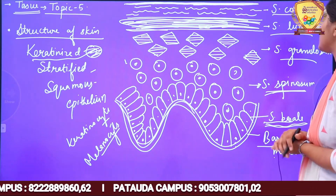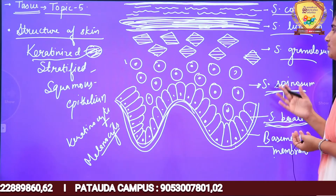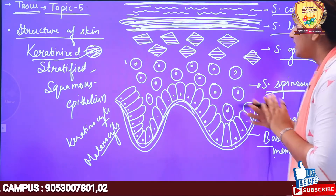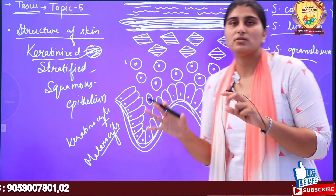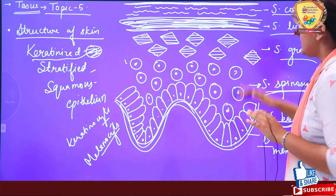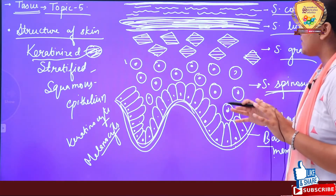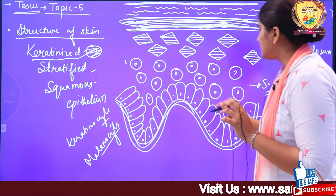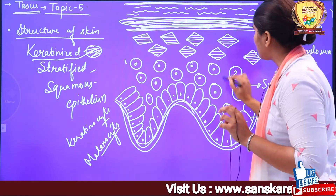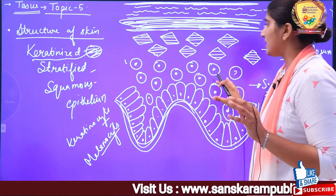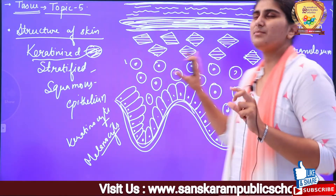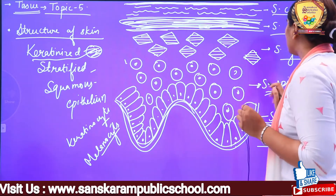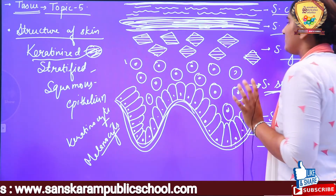Above stratum basale is stratum spinosum. The function of this layer is to provide flexibility. The cells formed in the basal layer come and settle here — these are the newly formed cells. The function of stratum spinosum is to provide flexibility.